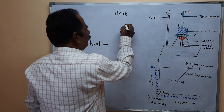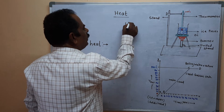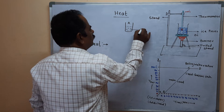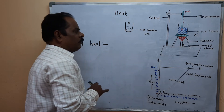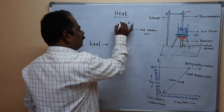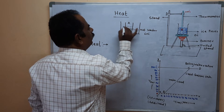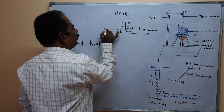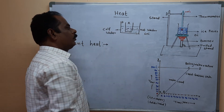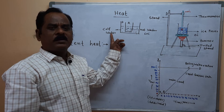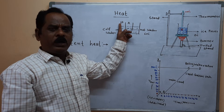Let us take an example. Take hot water in beaker A — its temperature is 60 degrees centigrade. Keep this hot water beaker inside beaker B, which contains cold water. When you do this, energy transfers from the hot body to the cold body.